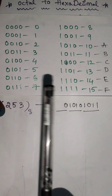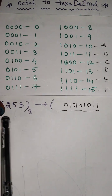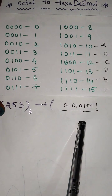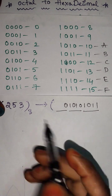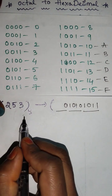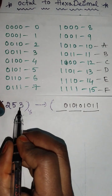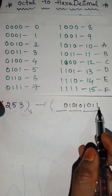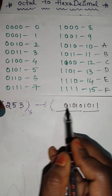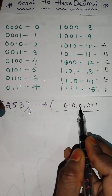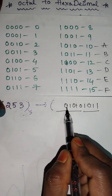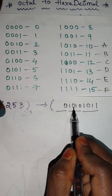first we need to convert the octal number into binary. We go from right to left: 3 means 0, 1, 1. 5 means 1, 0, 1. 2 means 0, 1, 0.